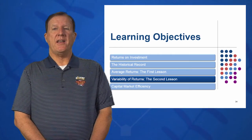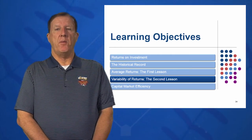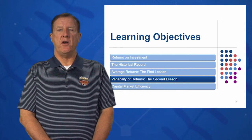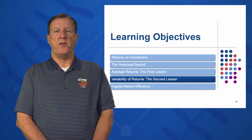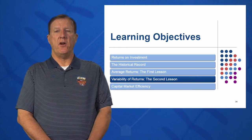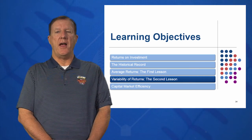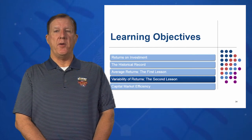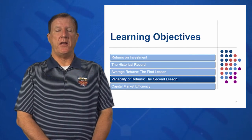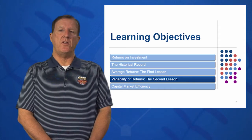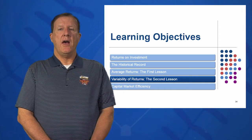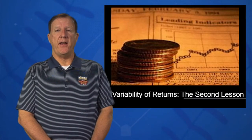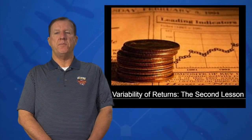In learning objective number four, we're going to look at variability of returns — the second lesson. How do these returns vary over time, and what are some good measures of variability statistically? Can we use statistics to measure variability of these financial instruments?